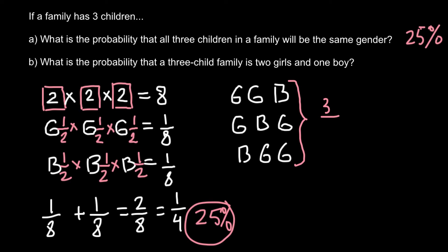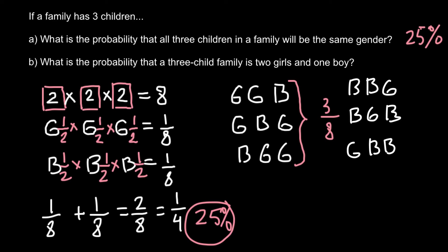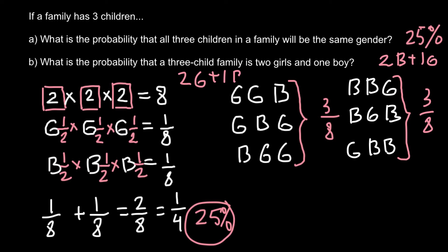This is also true for the reverse combination — two boys and one girl: boy, boy, girl; boy, girl, boy; and girl, boy, boy. So once again, three out of eight combinations in a family of three children give two boys and one girl.